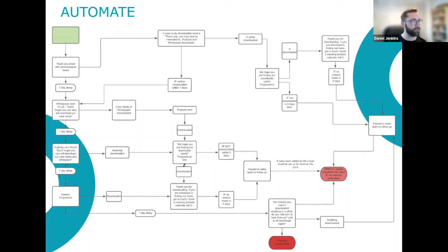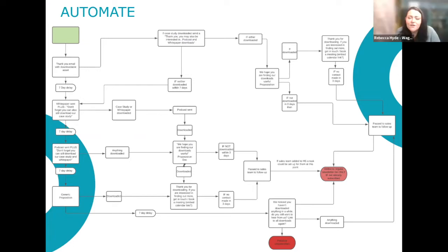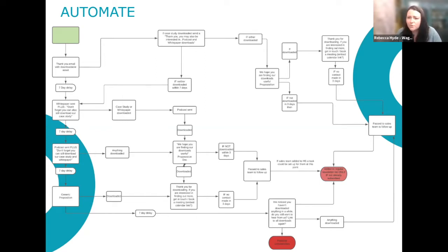I'll hand over to Bex, who'll talk through what automation actually means and how workflows work. Thanks Dan. The absolute key to good automation is making sure you're providing value at both ends — value to your business in terms of efficiency, saving time, and getting out the right communications, but also providing value to the person you're talking to. That's where a lot of people fall down, and their automation becomes quite spammy.